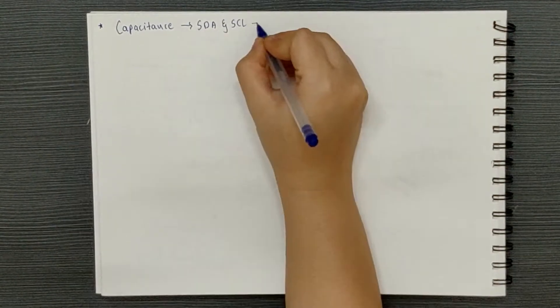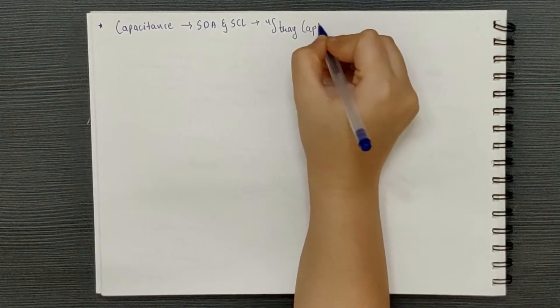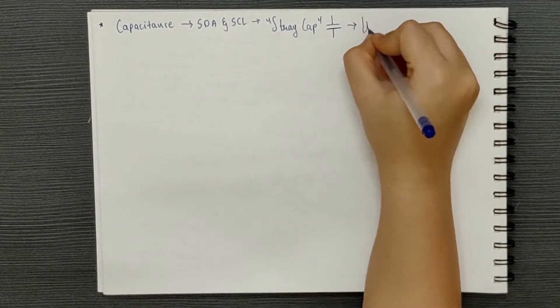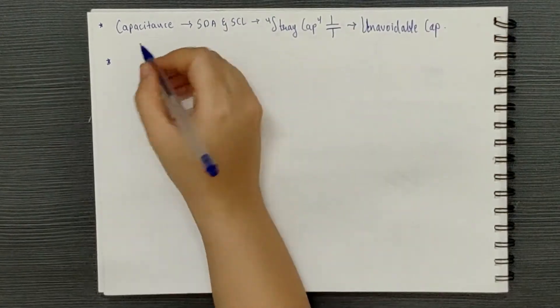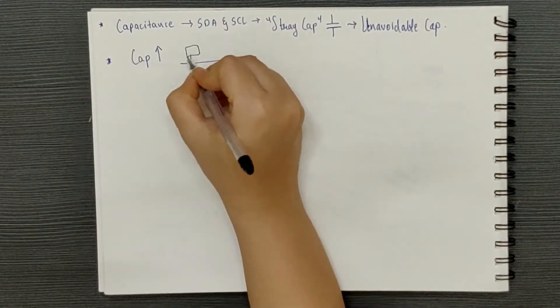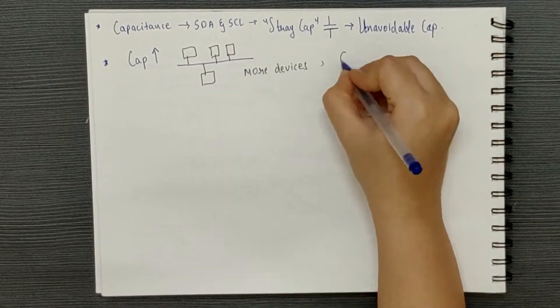there is a capacitance which is associated with both the data and clock lines. It is labeled as stray capacitance but it is the unavoidable capacitance that exists in the semiconductor structures connected to the lines. This capacitance is higher if there are many devices connected and lower otherwise.